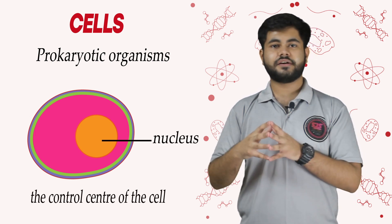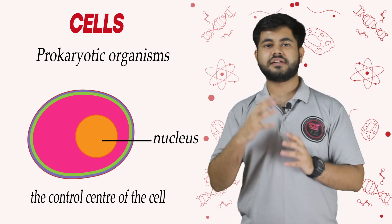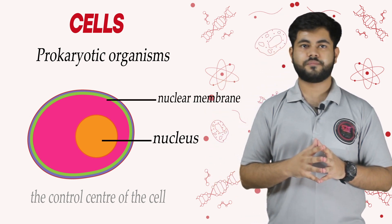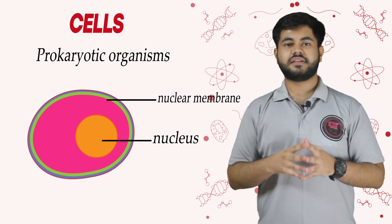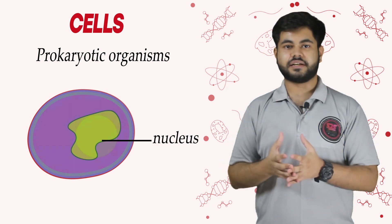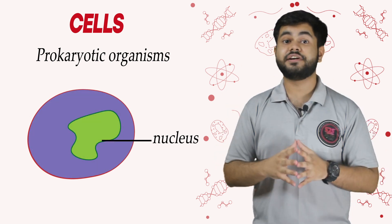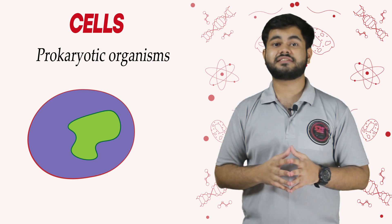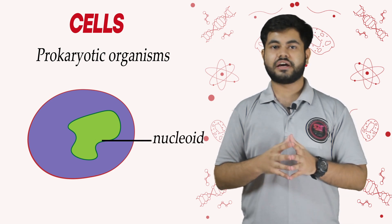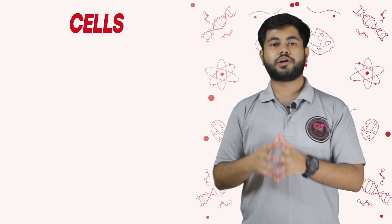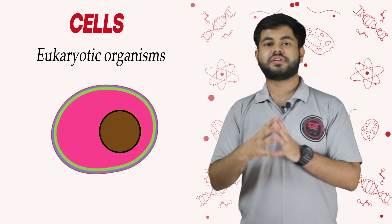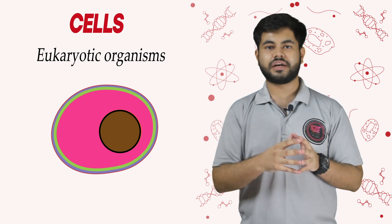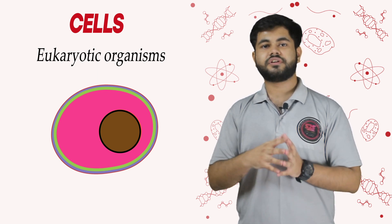In prokaryotic organisms, the nuclear membrane is absent — there is no well-defined nucleus, so the nuclear region is known as the nucleoid. Eukaryotic organisms, on the other hand, have a well-defined nucleus. This is the basic difference between prokaryotic and eukaryotic organisms.